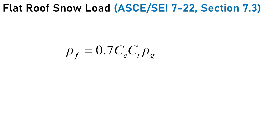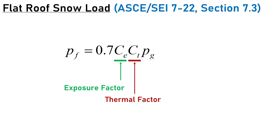Let's talk about flat roof snow loads and how to calculate them. We denote the flat roof snow load with PF, and it's an equation that considers exposure of our roof, any thermal factors of the roof itself, and our ground snow load. The last term, 0.7, accounts for the differences in accumulation of snow on the ground versus on an elevated surface such as the roof. In general, elevated surfaces are going to have less snow than the ground itself.